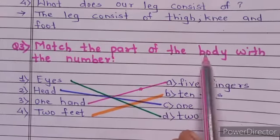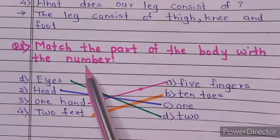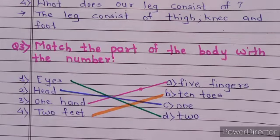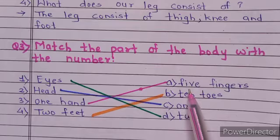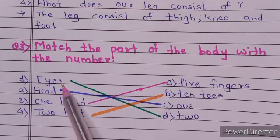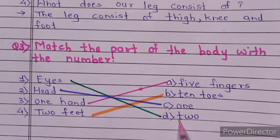Question number three, match the part of the body with the number. The parts of the body are given and in how many numbers they are found. Eyes, we have two eyes, so match it with two.